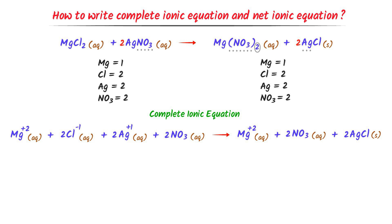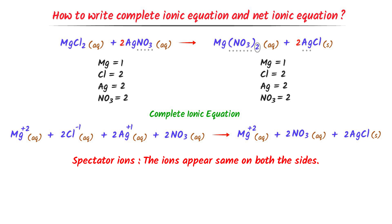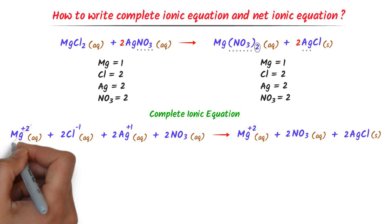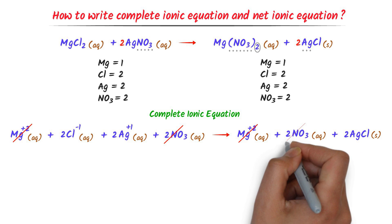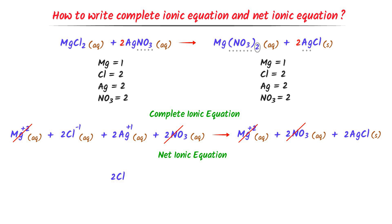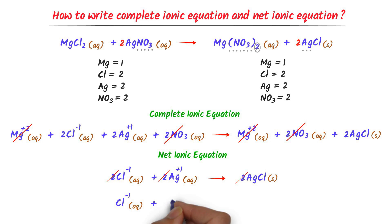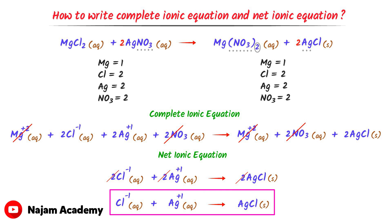Remember the important concept of spectator ions. Ions that appear the same on both sides with the same physical state are called spectator ions. For example, the aqueous magnesium ion on both sides are spectator ions. I cancel out all spectator ions: magnesium ion and magnesium ion, two nitrate ions and two nitrate ions. What remains is: 2Cl⁻ + 2Ag⁺ react to form 2AgCl. Dividing through by 2: Cl⁻ + Ag⁺ → AgCl. This is the net ionic equation.